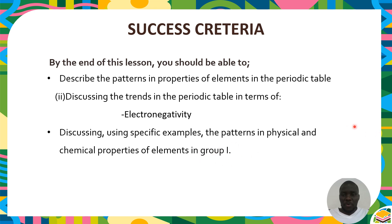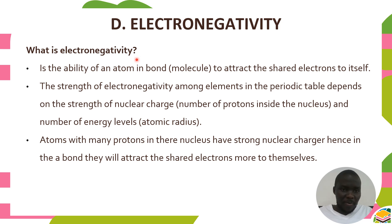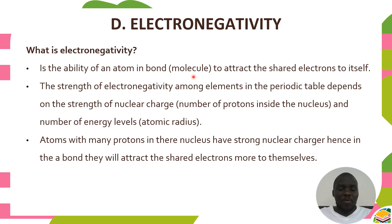Let us start by looking at the definition of electronegativity. Electronegativity will be slightly different from the other trends we have looked at so far, so it is important to pay attention and note the differences. Electronegativity is the ability of an atom in a bond to attract the shared electrons to itself. Remember, we have covered ionic as well as molecular compounds in Form 1, and in molecules atoms are joined together by a bond.